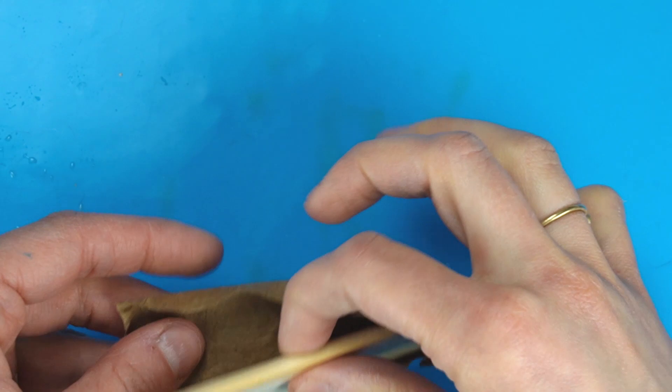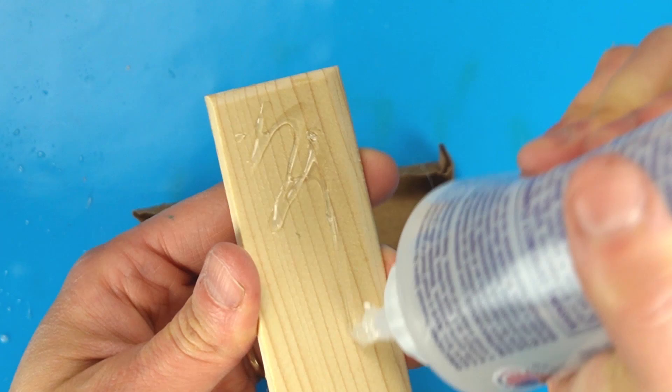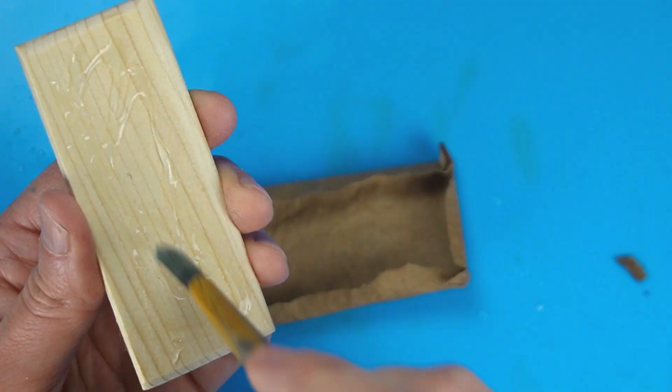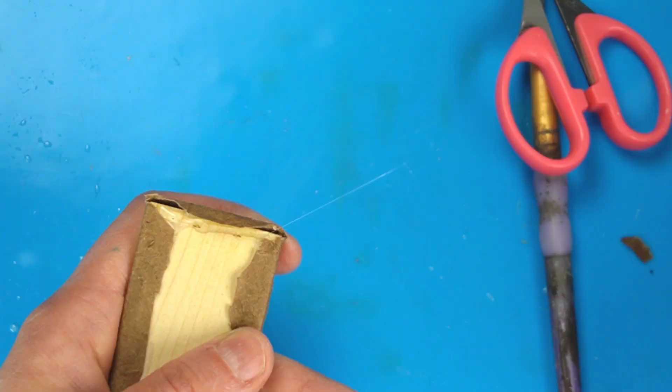You can let it air dry, but I used my hair dryer to speed it along. Now the paper is dry and I can glue it down. Fabri-Tac is quickly becoming one of my favorite glues, and that's the glue I'm using whenever you see that clear bottle.